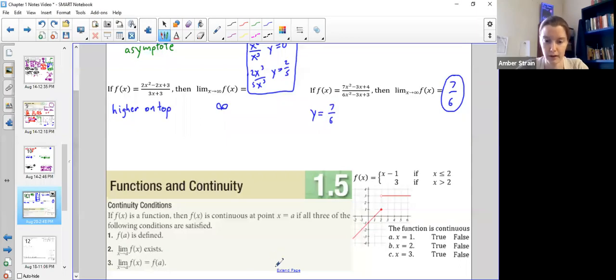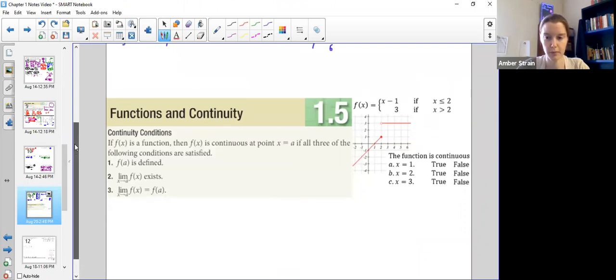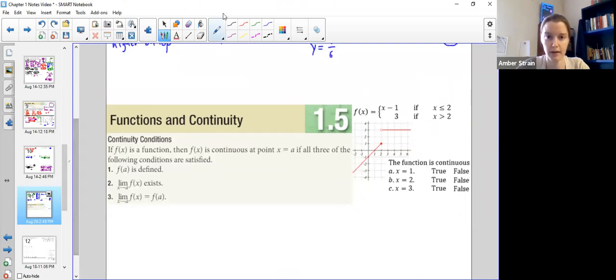Hello, today we're going to cover business calculus section 1.5 on continuity. We're leading directly in from the limits that we learned last time. Now the limits, if you remember, they would exist when they meet up at that same place. So there could be a hole, but as long as they met up, it's okay. Now continuity is more specific. It's harder to be continuous than it is to have a limit.